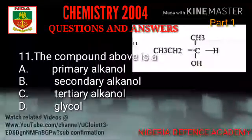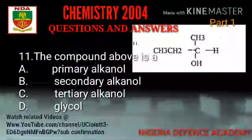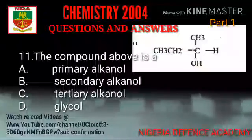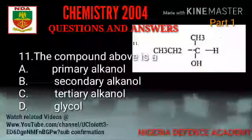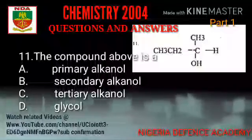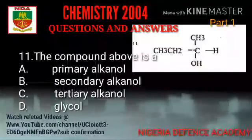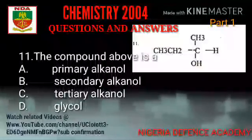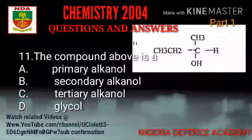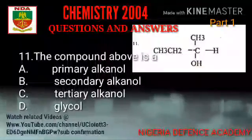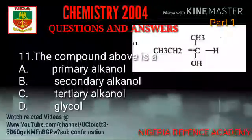The next question: the compound shown is what? Option A: primary amine. Option B: secondary amine. Option C: tertiary amine. Option D: another classification. The right answer is option B — secondary amine.